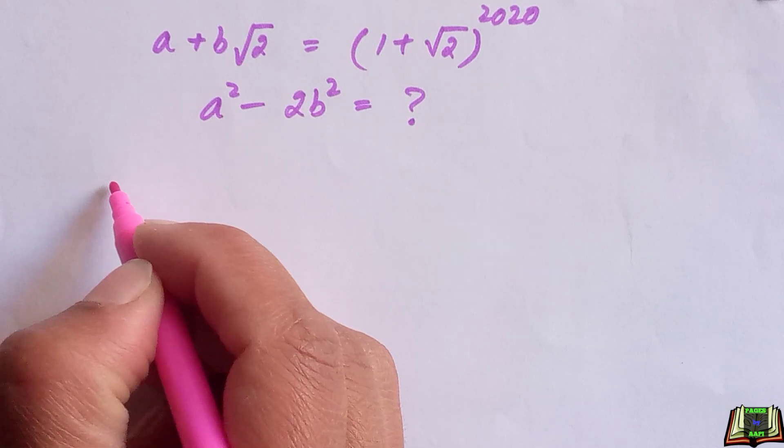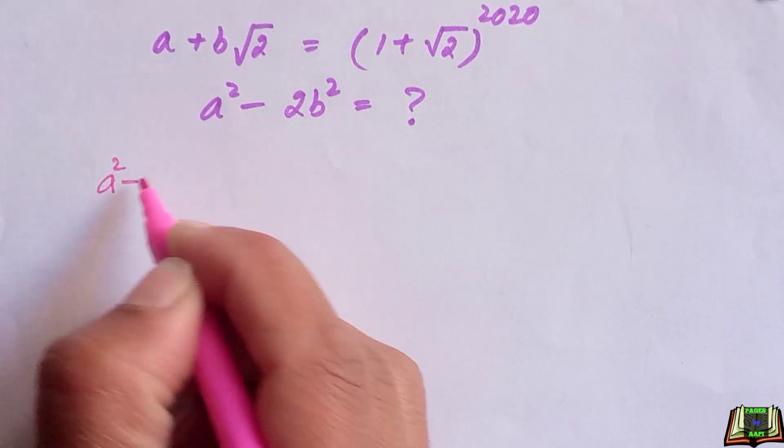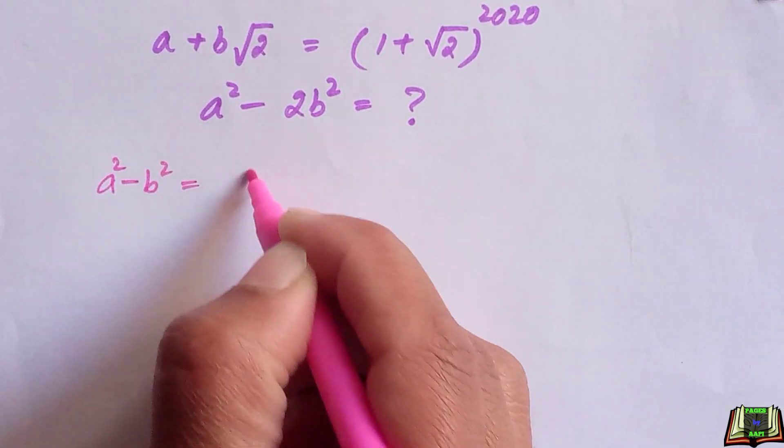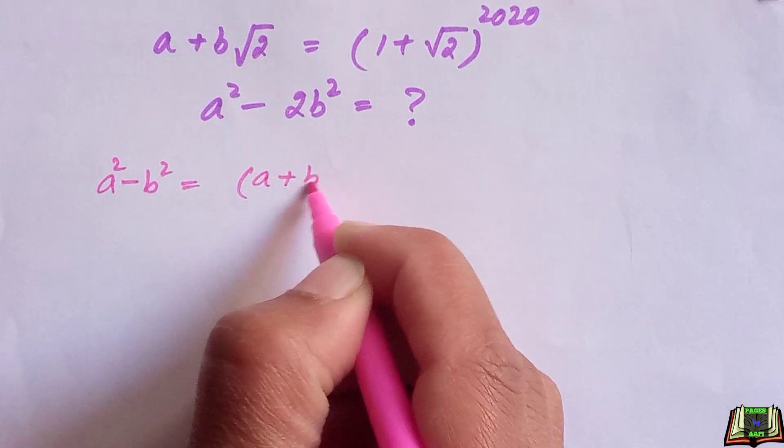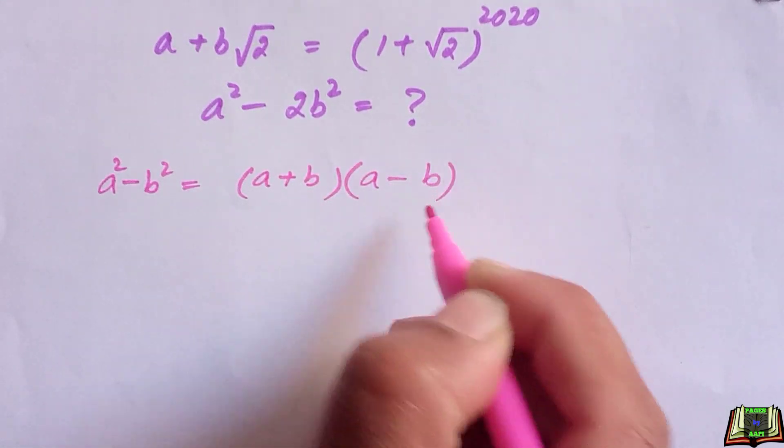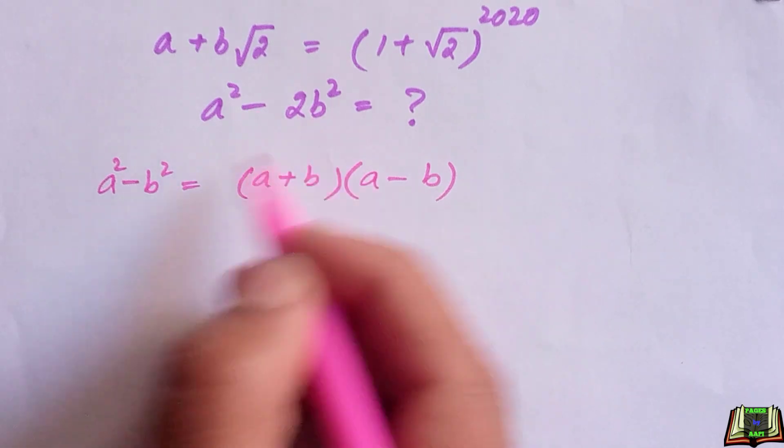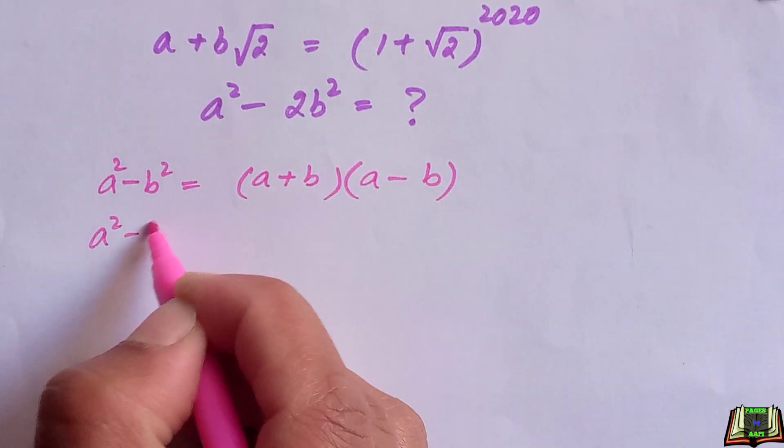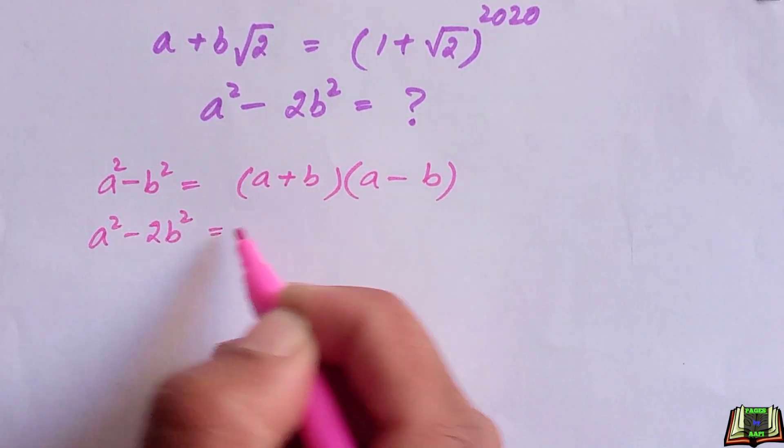Let's find out the solution. We know an algebra identity: a² - b² = (a + b)(a - b). We are going to use this identity for a² - 2b².